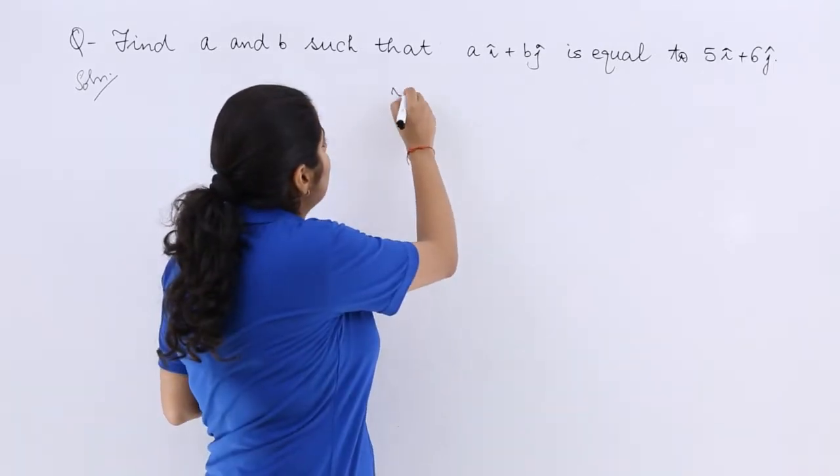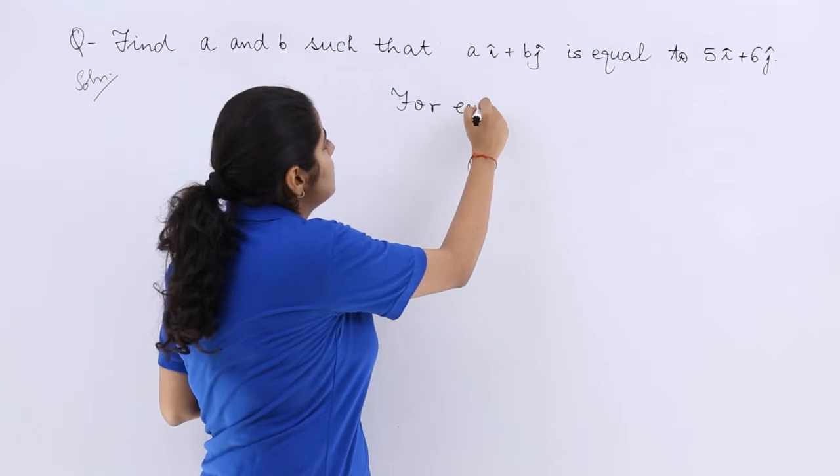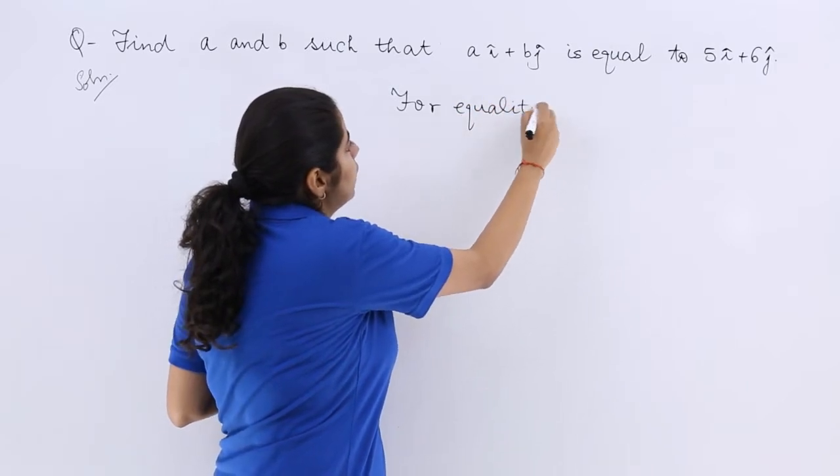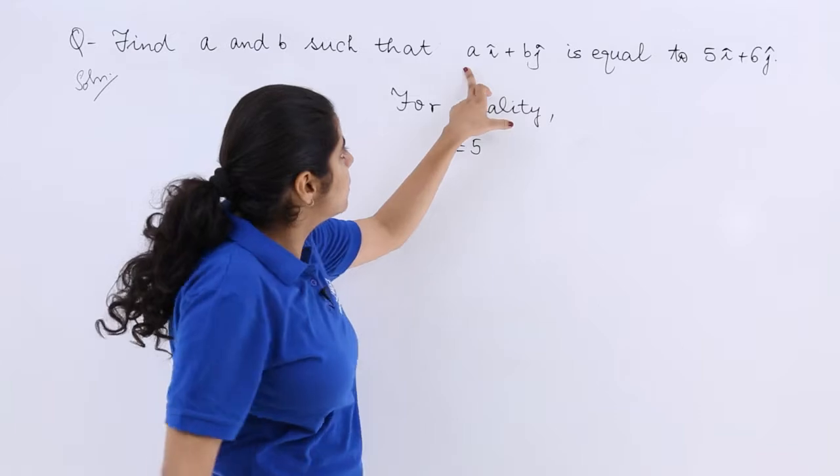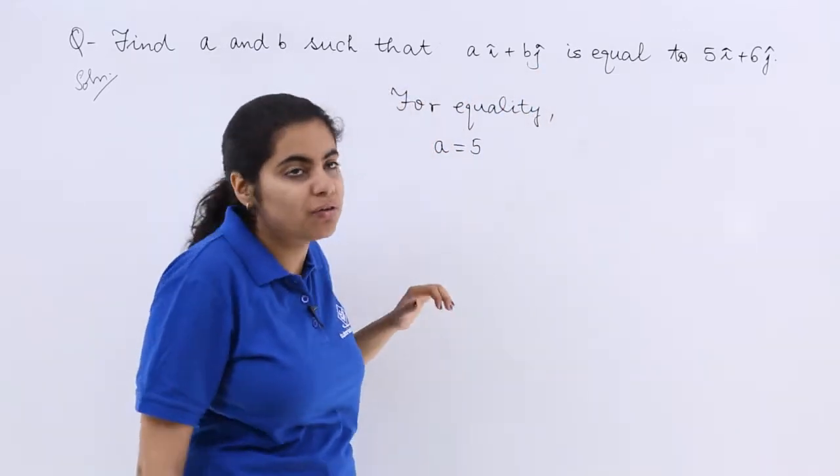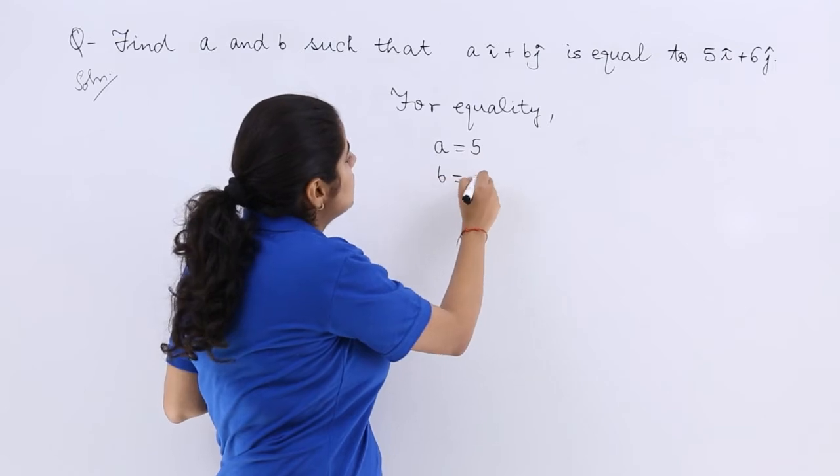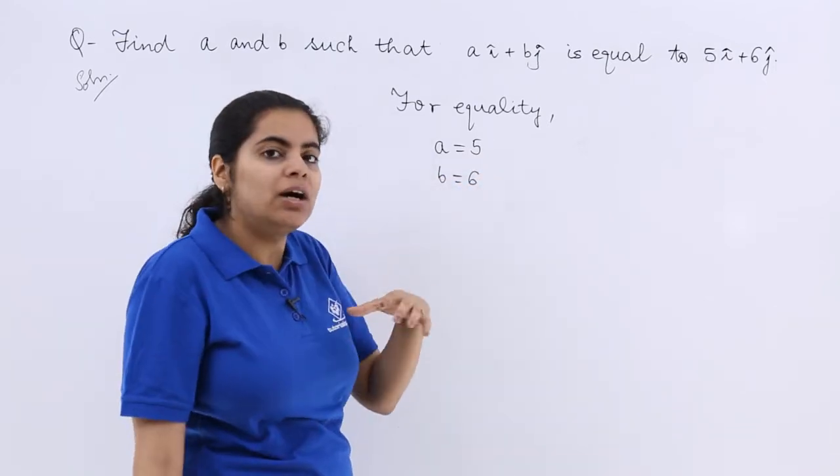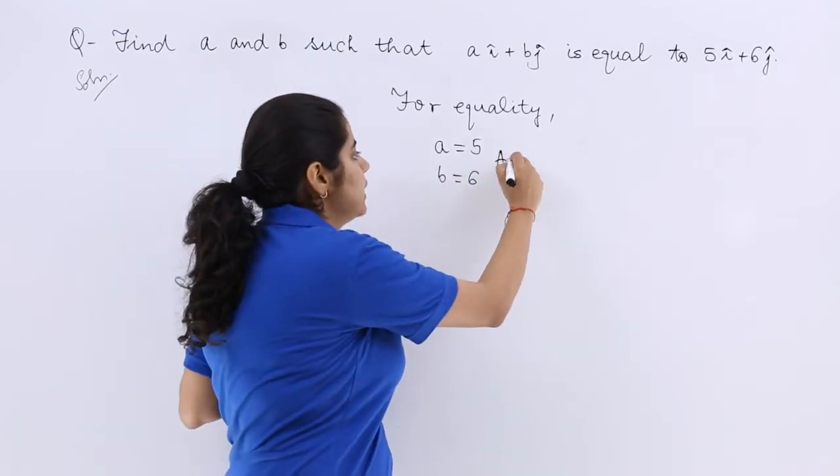So for equality, simply I can write, this is very easy, just an oral question. A is equal to 5 because A is the coefficient here of i cap and 5 is the coefficient here of i cap, and similarly B is equal to 6. Now this is the answer to this question, that's done.